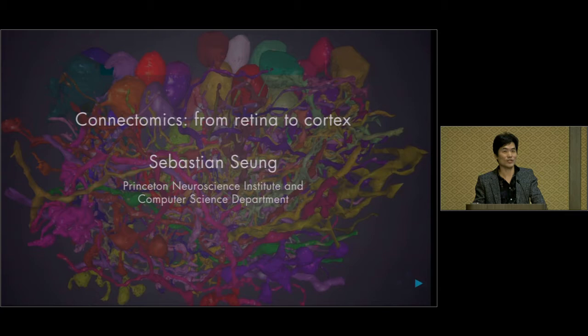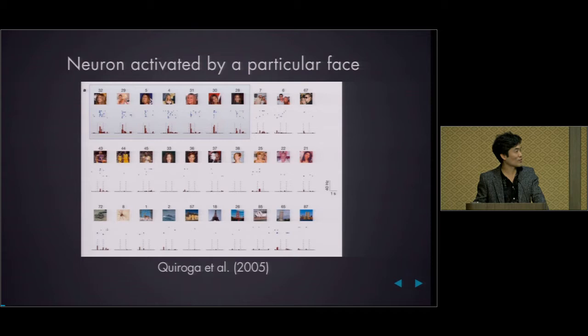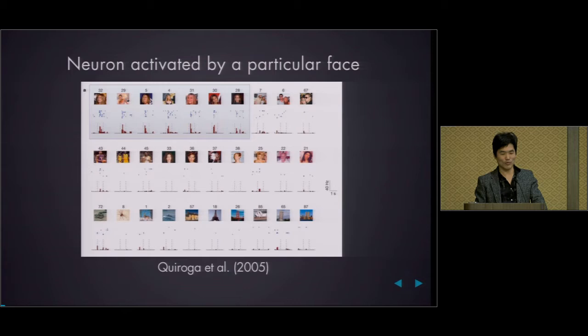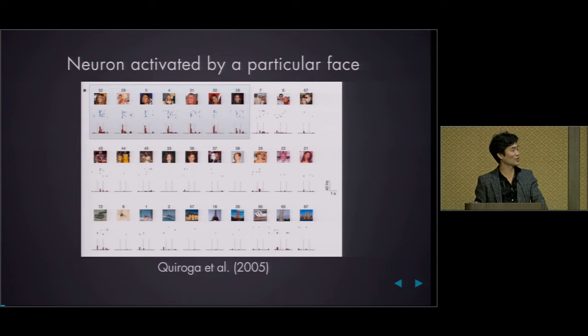I'd like to first address a question that was asked by a gentleman earlier today after the panel: why do we need to record the activity of many neurons at the same time? Why is it not enough to record from a single neuron? Here's a famous experiment from Itzhak Fried and Christoph Koch — a single neuron recording in a human patient. You can see the stimuli shown to the patient and below the spike trains recorded. This neuron responded to pictures of Jennifer Aniston. It didn't respond to other celebrities like Kobe Bryant or Julia Roberts, or to the Eiffel Tower, or to spiders. They call this the Jennifer Aniston neuron.